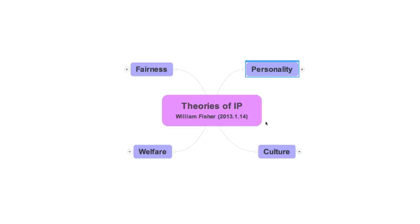Theories of the third sort focus not on the interest or moral entitlements of individual creators, but on the welfare of society at large. They contend that copyright laws can and should be crafted to produce the greatest good of the greatest number. The way that familiar utilitarian criterion is usually translated is that the law should create a system of incentives that will induce potential authors to generate works from which we will all benefit, and then make the fruits of those efforts widely available. In other words, the law should combine in an optimal mixture stimuli for creativity and mechanisms for distributing creative works to consumers.